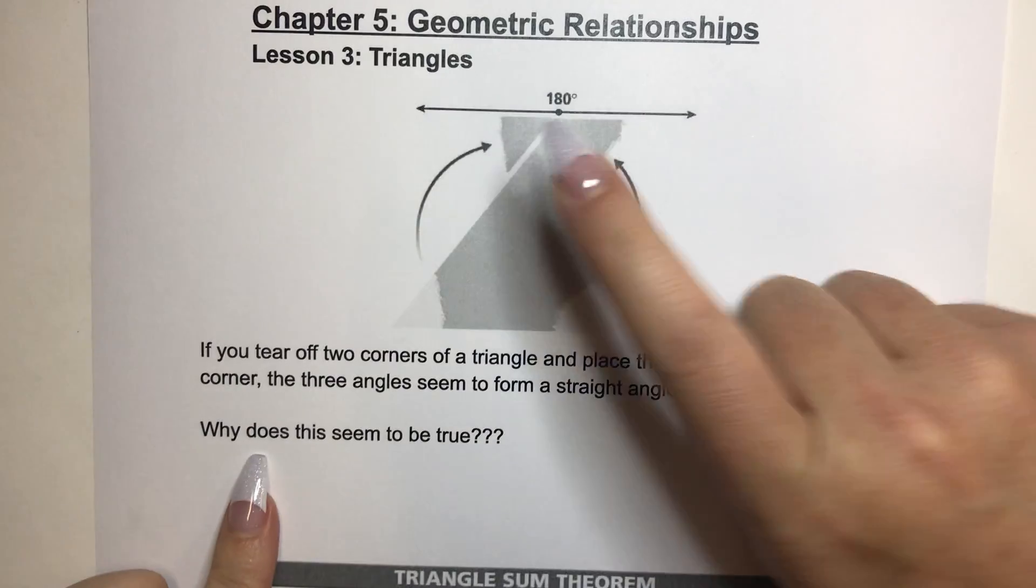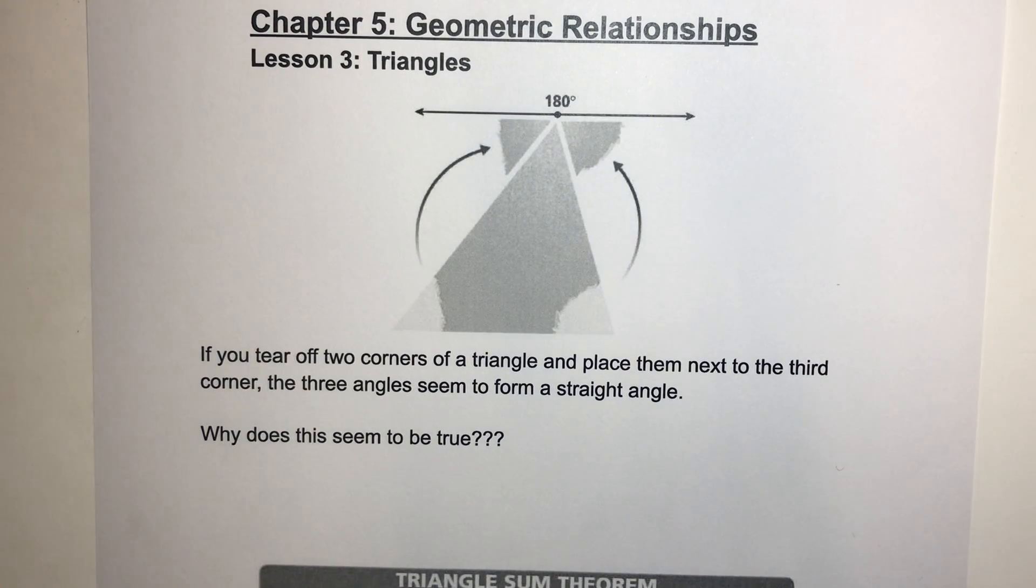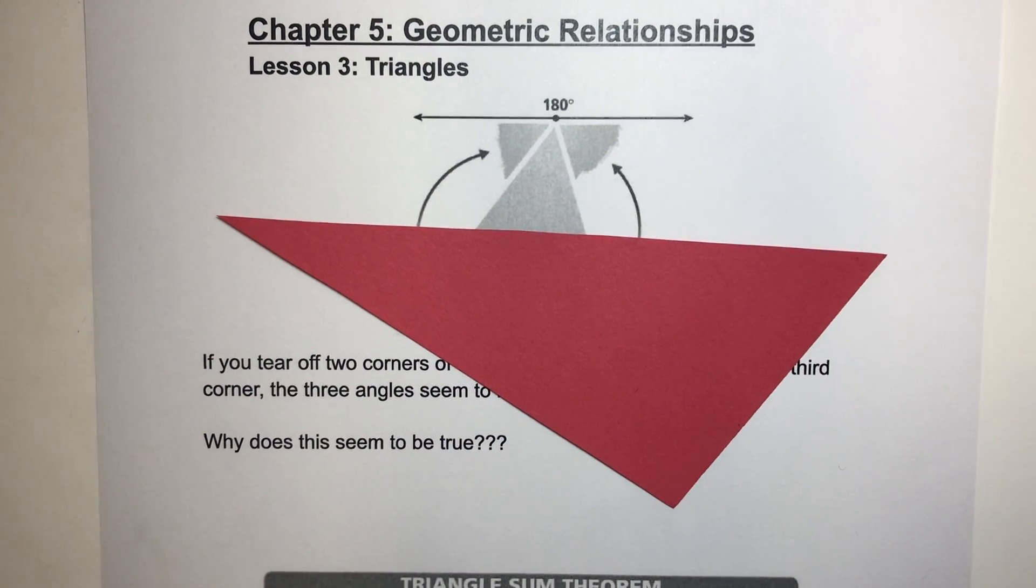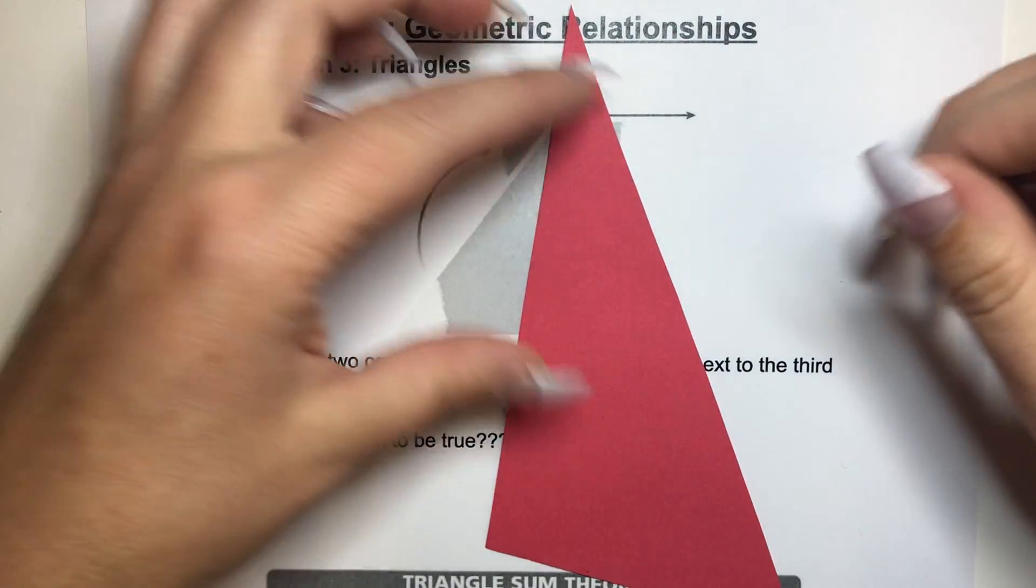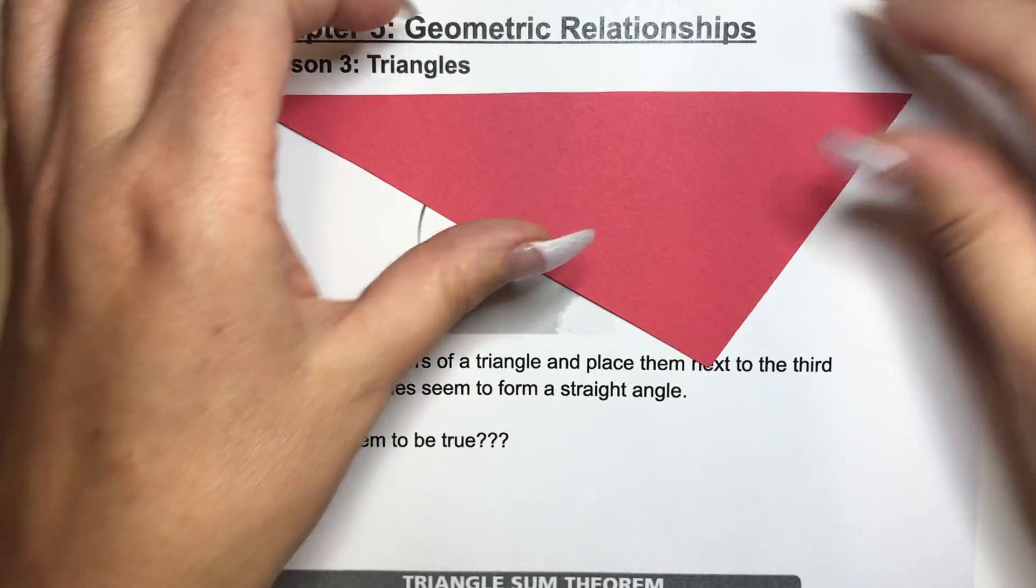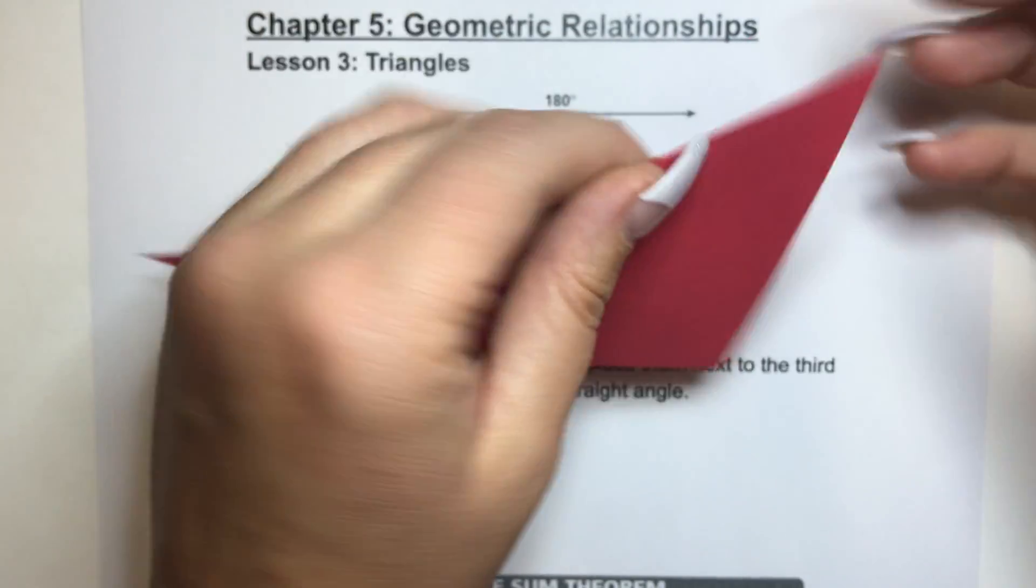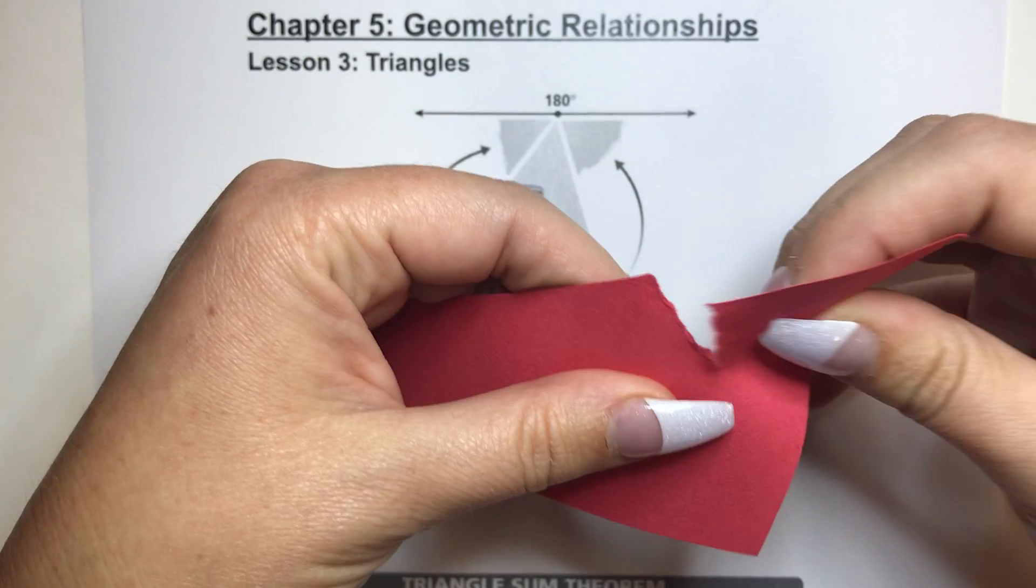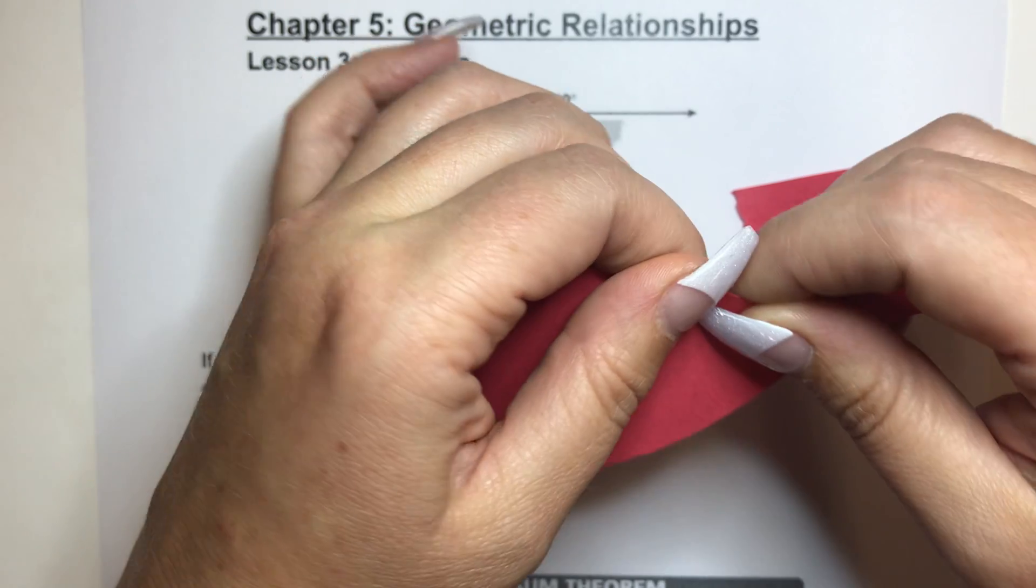They're taking this angle and flipping it there and taking this angle and flipping it there, and what they're saying is it's forming a straight angle. That's crazy. Why does this seem to be true? So I saw this and I was like, you know what, let me try it. So I have a triangle here, and I just want to see if it's true.